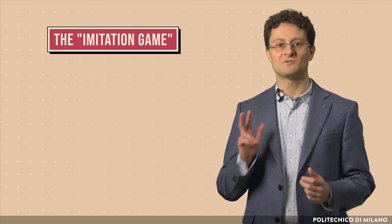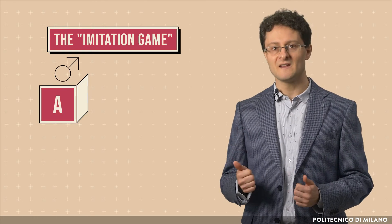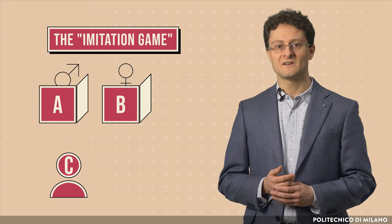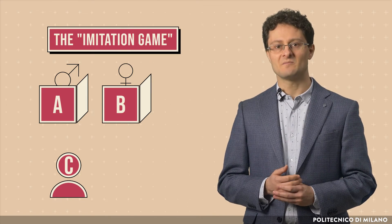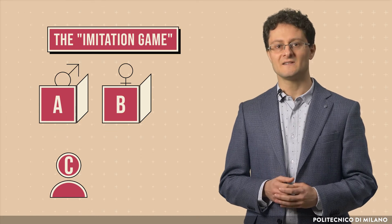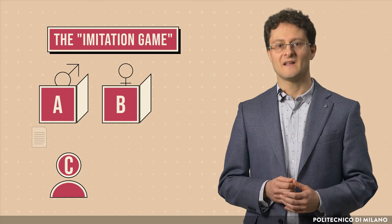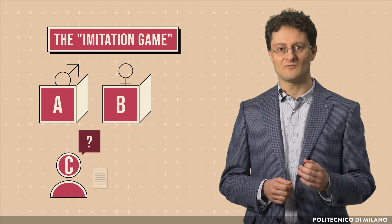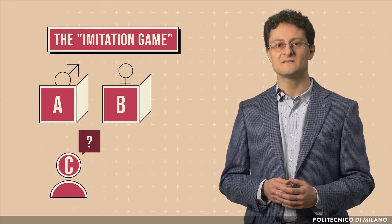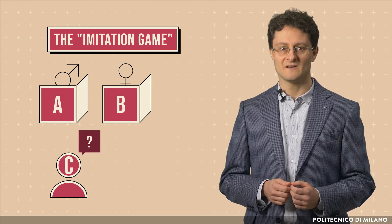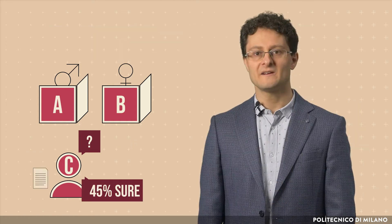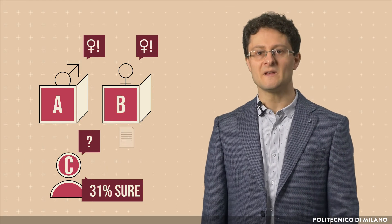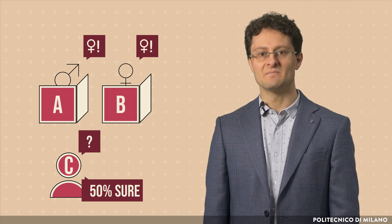The imitation game is a three-player game in which player A is a man, player B is a human, and player C, who plays the role of the interrogator, is of either sex. Player C is unable to see either player A or player B and can communicate with them only through written notes. By asking questions of player A and player B, player C tries to determine which of the two is the man and which is the human. Player A's role is to trick the interrogator into making the wrong decision, while player B attempts to assist the interrogator in making the right one.